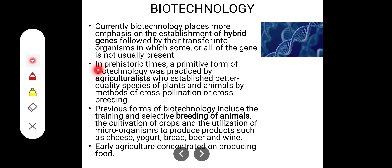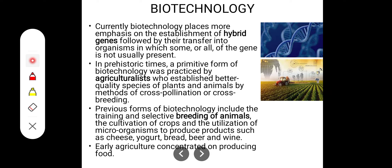In prehistoric times, a primitive form of biotechnology was practiced by agriculturists in the cultivation and collection of crops. It was also practiced to get better quality species of plants and animals — like poultry and fishery — by methods of cross-pollination for plants and cross-breeding for animals.